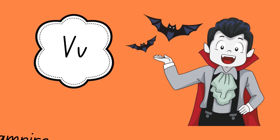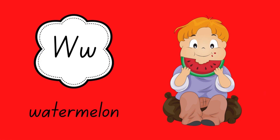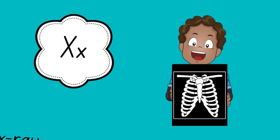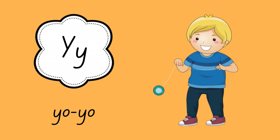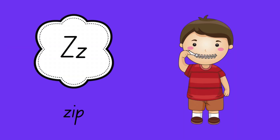U is for umbrella. V is for vampire. W is for watermelon. X is for x-ray. Y is for yo-yo's. Z is for zip.